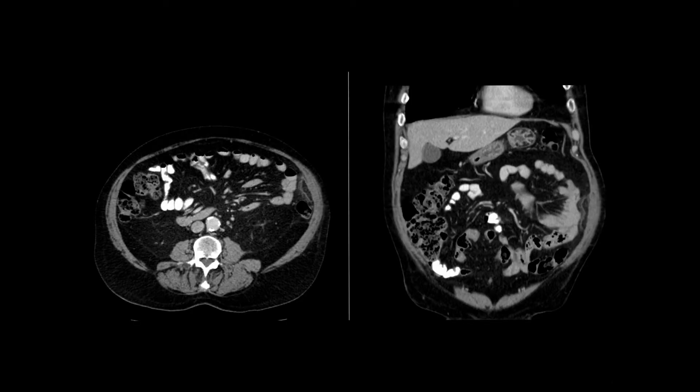This is a patient in her late 50s who presents with left-sided iliac fossa pain. You can see here adjacent to the descending colon there is an ovoid fat containing structure with some surrounding peritoneal fat inflammation.